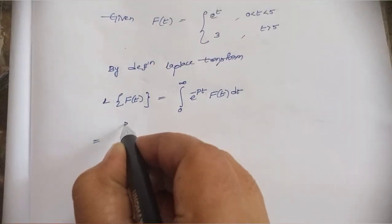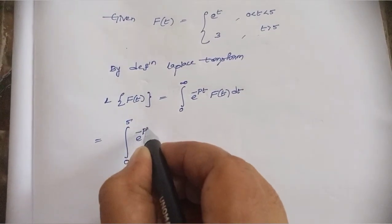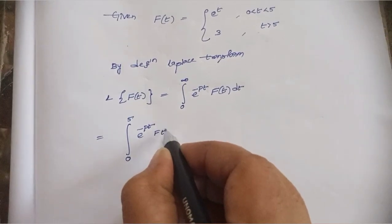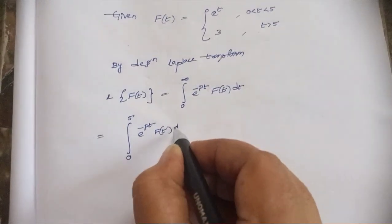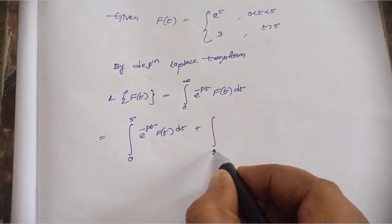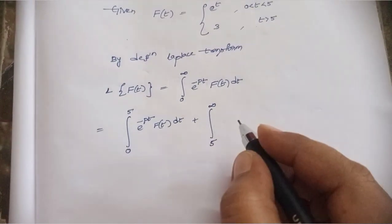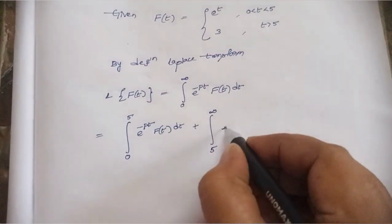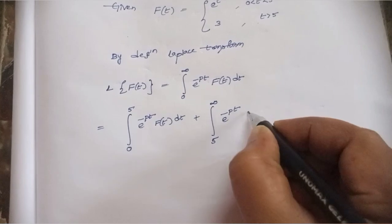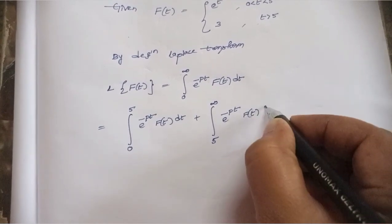The integral splits as: from 0 to 5, e^(-pt) · f(t) dt, plus from 5 to infinity, e^(-pt) · f(t) dt.